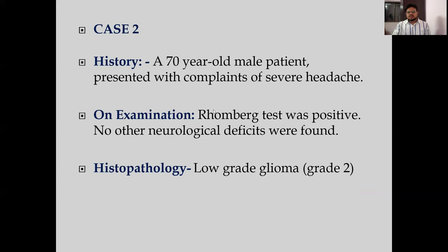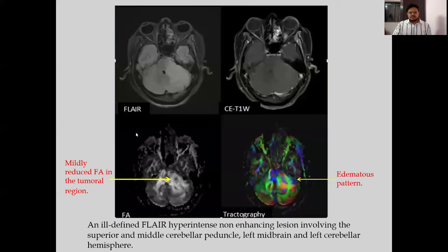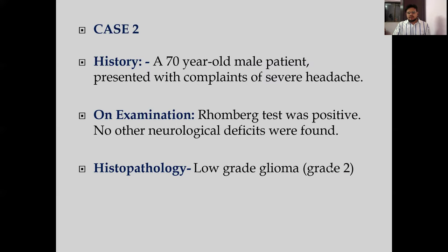Case 2: a 70-year-old male presented with a complaint of severe headache. On examination, Romberg's test was positive; however, no other neurological deficit was found. Imaging revealed an ill-defined FLAIR hyperintense, non-enhancing lesion in the superior and middle cerebellar peduncle, left midpons, and left cerebellar hemisphere. There was mild reduction in fractional anisotropy in the tumoral region and the white matter tracts were displaced. Histopathology revealed a low-grade glioma, grade 2.